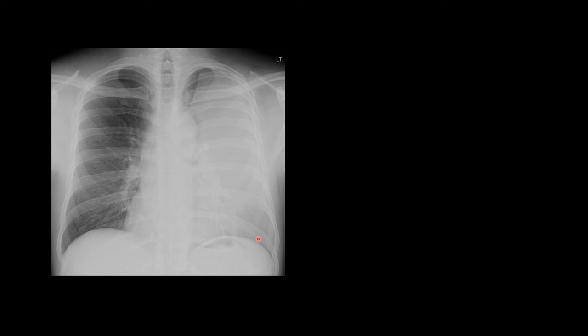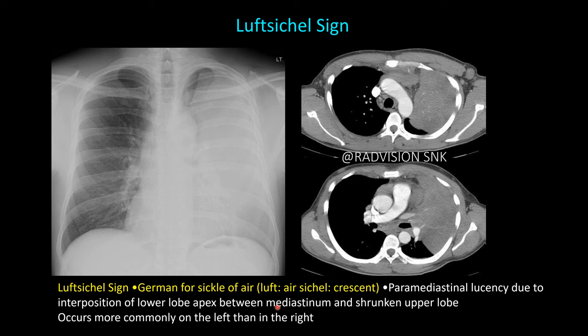Next case: there is homogeneous opacification of the left lung zone, but there is a crescent-shaped or sickle-shaped lucency noted in the para-mediastinal location. This is the collapsed upper lobe, and the lucency is the superior segment of the lower lobe trying to compensate for the loss of the upper lobe between the mediastinum and the collapsed upper lobe. This crescent is the Luftsichel sign — a German word where 'Luft' means air and 'Sichel' means crescent. On CT, you can clearly see the collapsed lobe and the lucent zone representing the apical segment of the lower lobe compensating for the upper lobe.